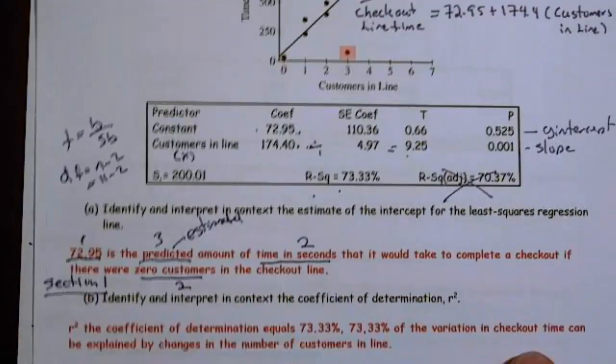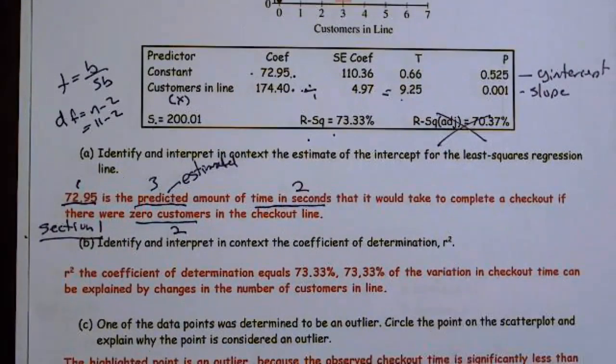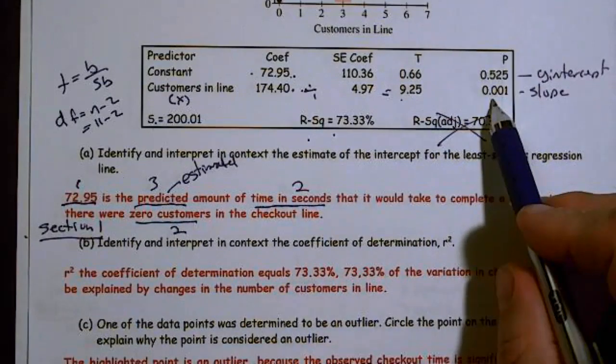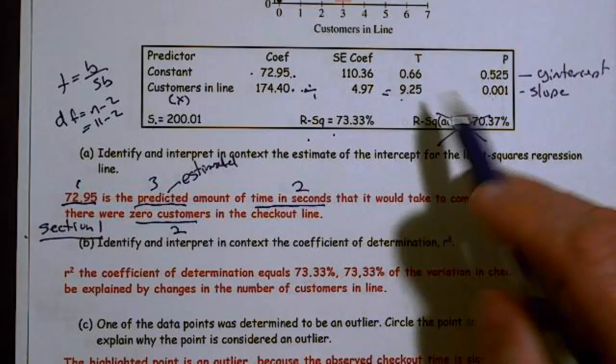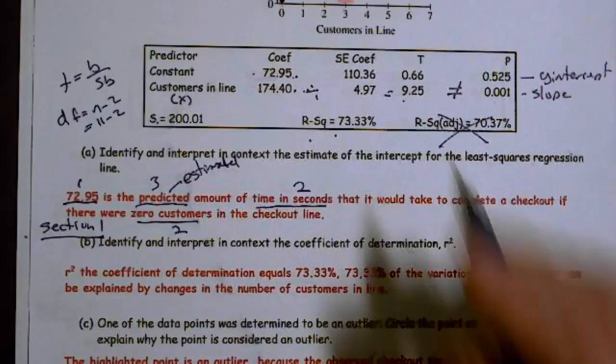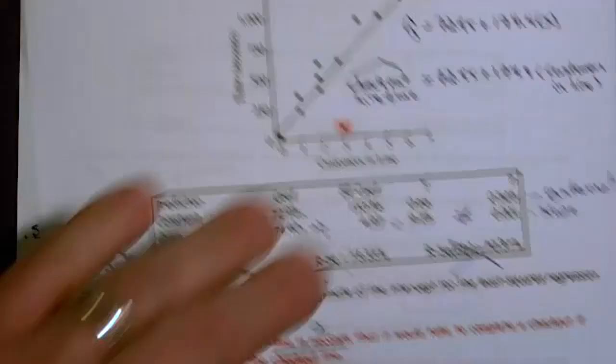But I thought I'd go ahead and take a moment to explain them. This is the probability of getting a T statistic this extreme. And remember, we're based on this, we're not equal, where our slope, or our null hypothesis is beta 1 equals 0.